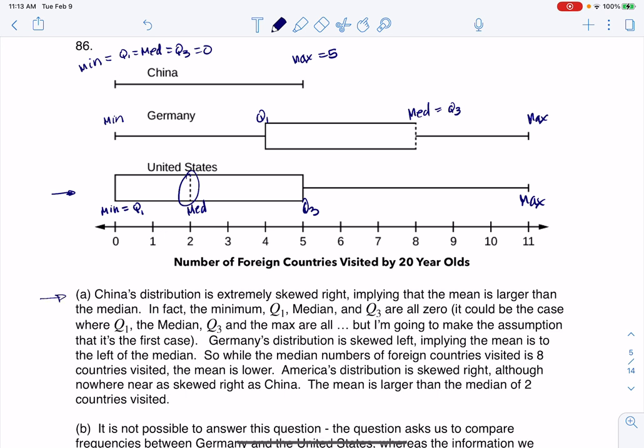If all of the data is basically clumping on the left side and the right tail is the longer part, then this data is extremely skewed right, implying that the mean is larger than the median. And I said, I think, like I was just saying, min, Q1, median, and Q3 are all zero. And I put this little caveat here that it could be the case where Q1, median, Q3, and the max are all the same. I will fix that boo-boo. But I'm going to make the assumption that it's the first case.